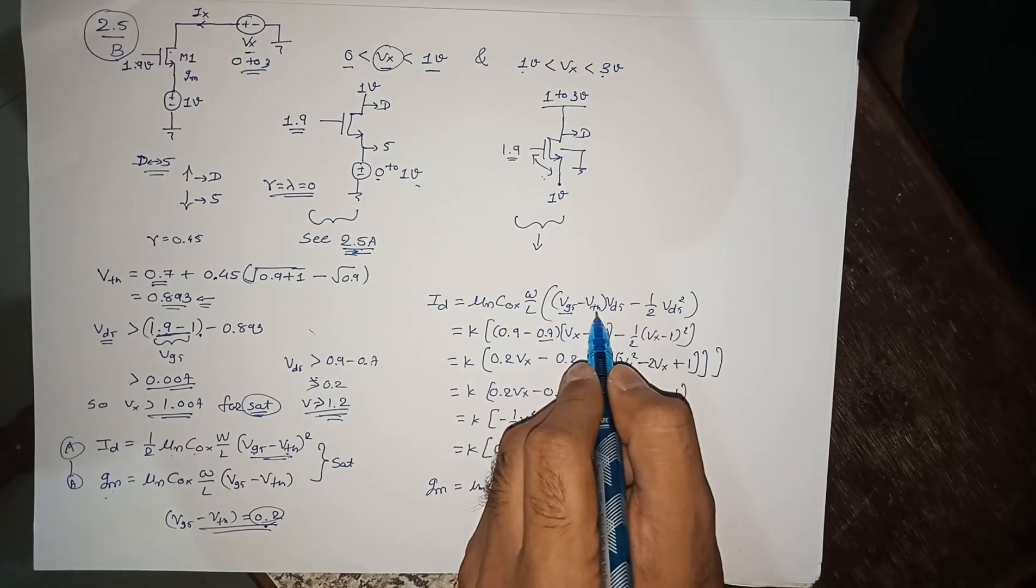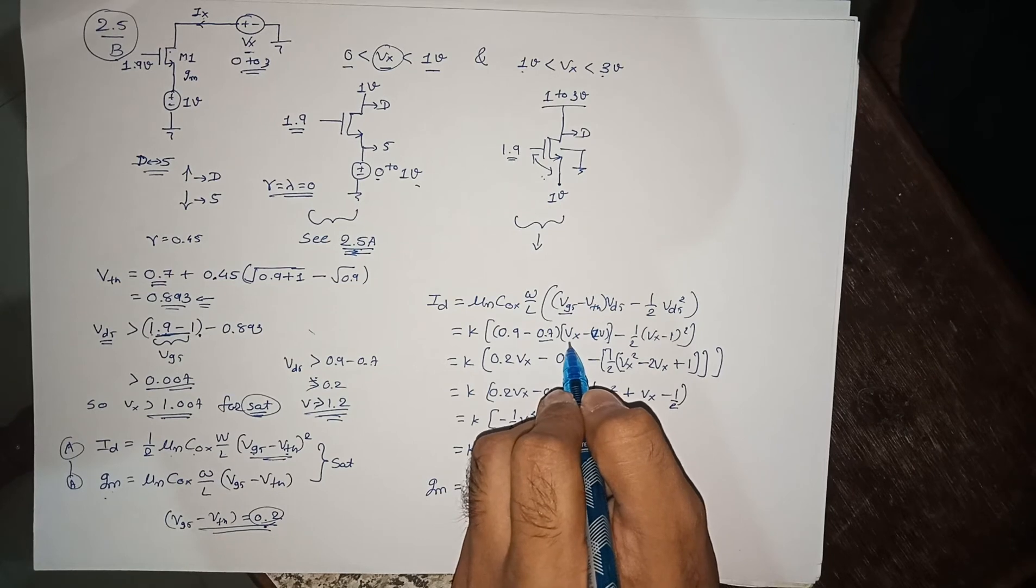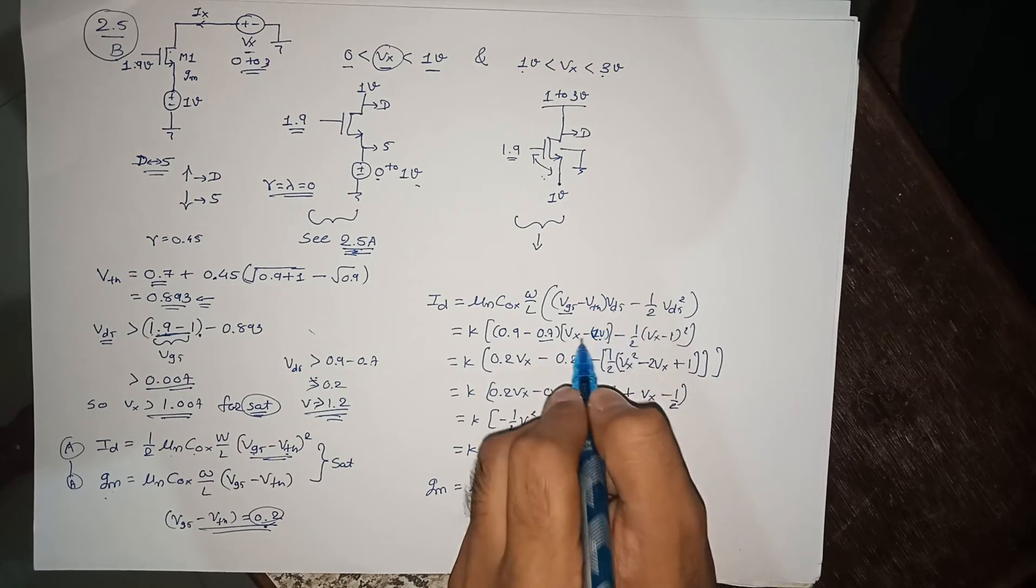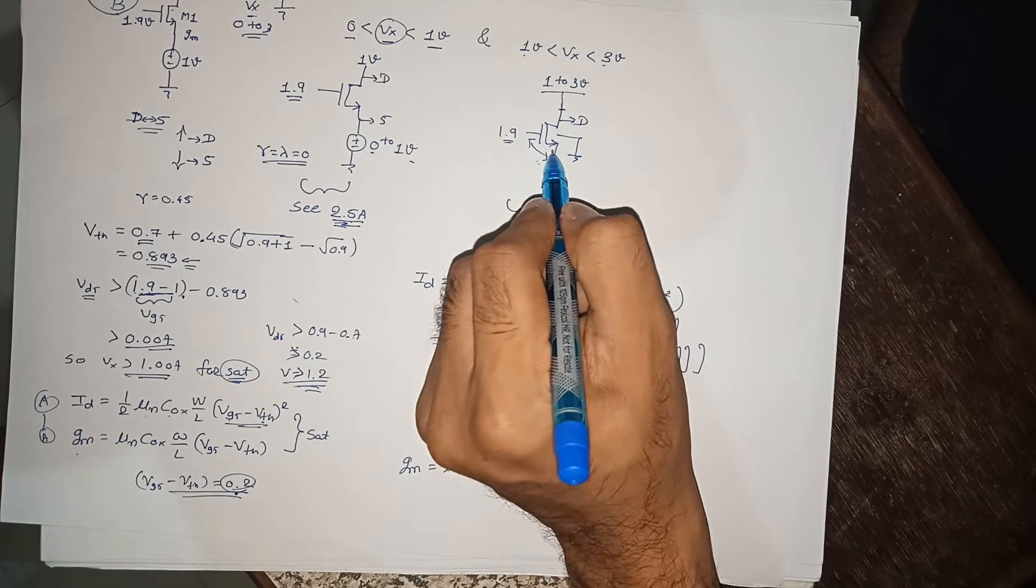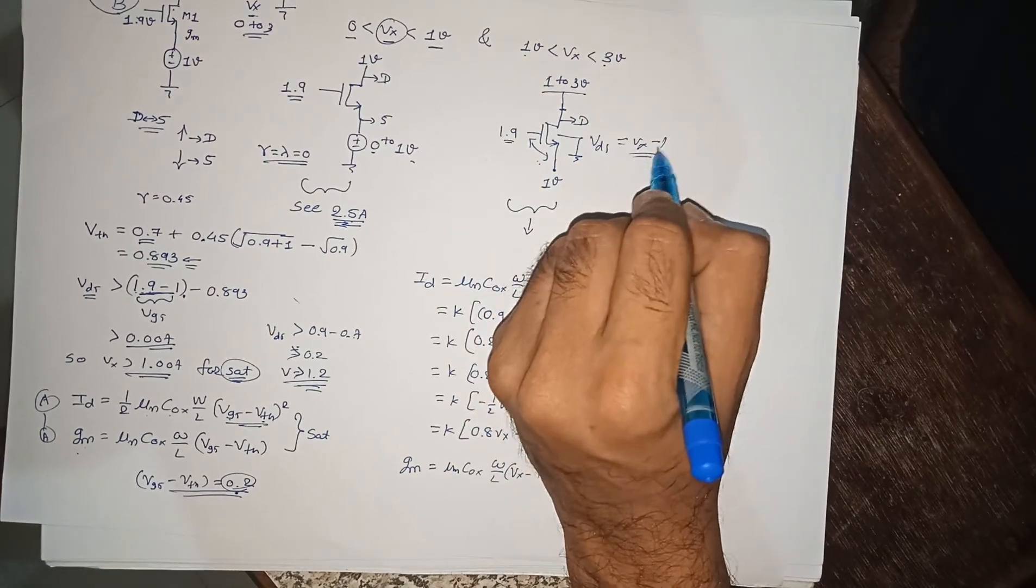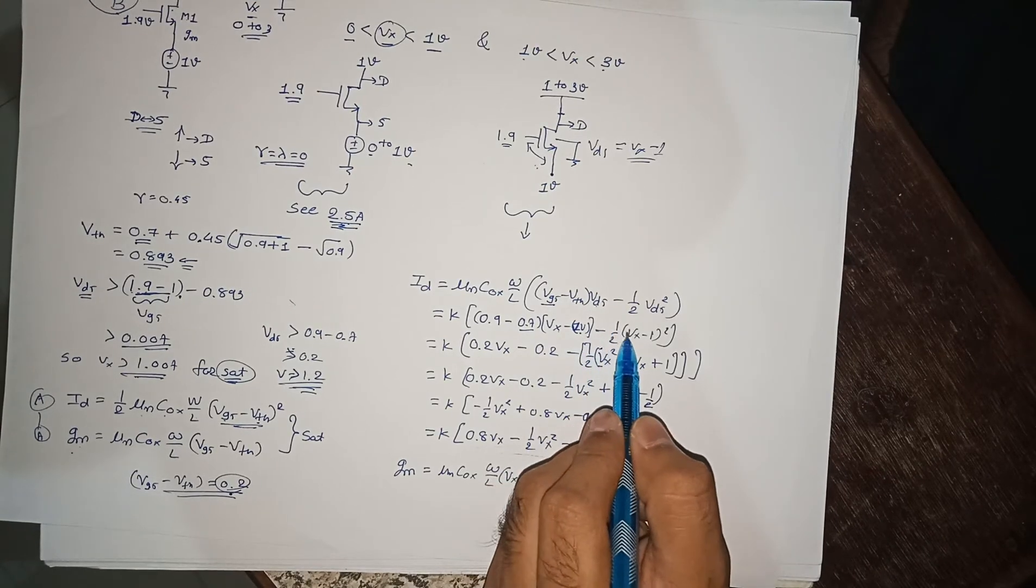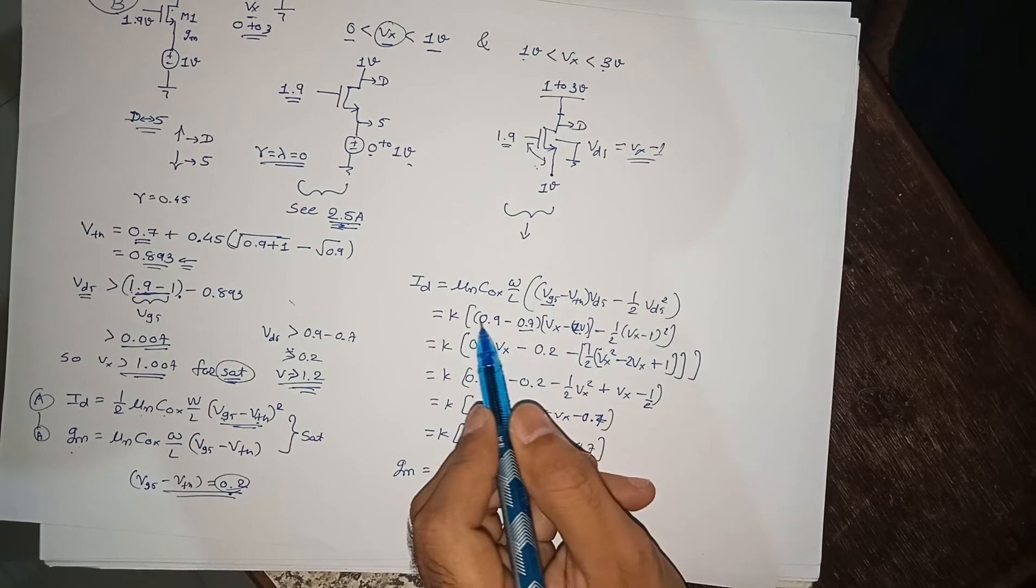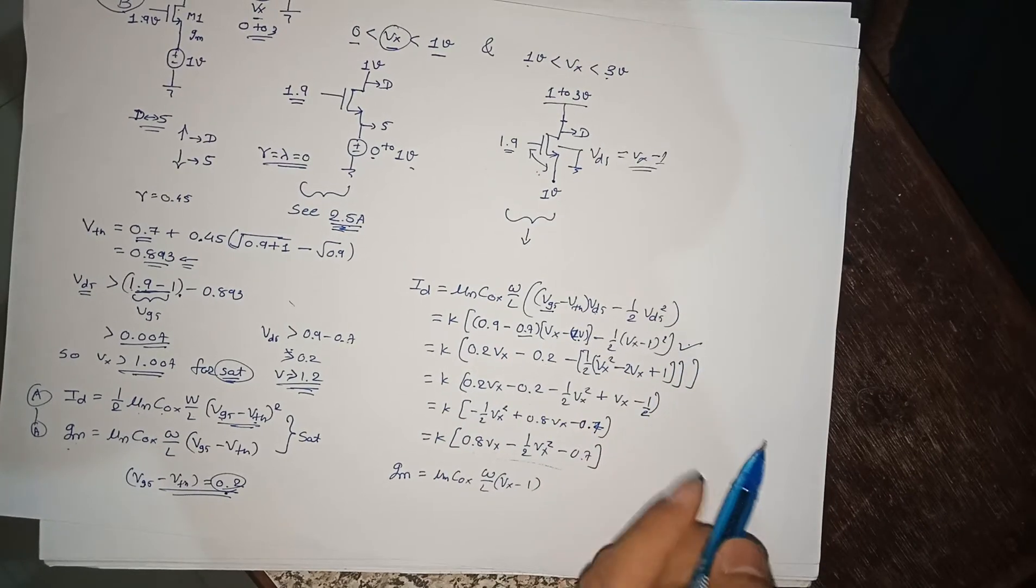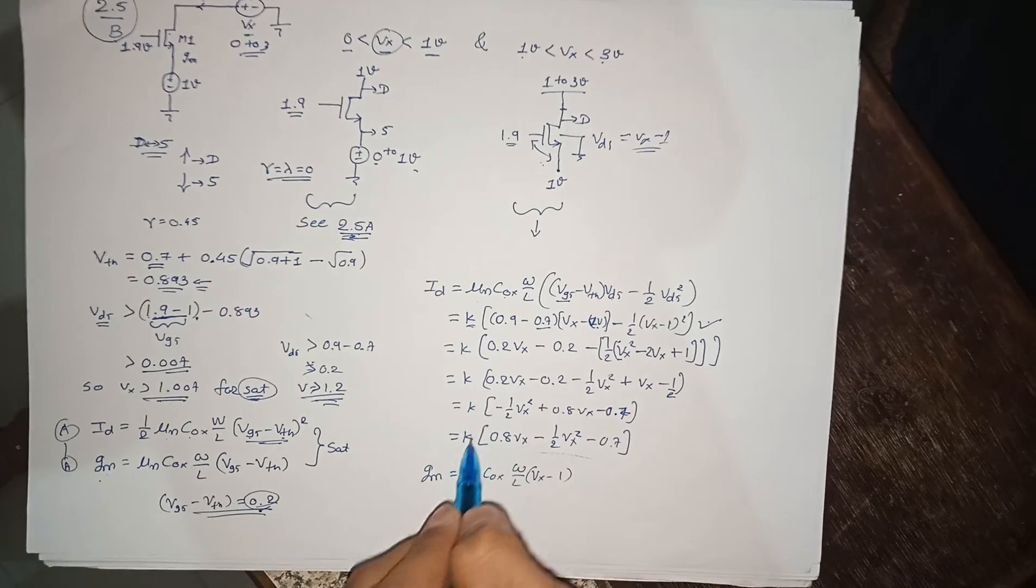If you don't want to consider the body effect, you can just use 0.7. VX minus 1, that is VDS. VDS is VX minus 1 volt. Minus one half VX minus 1 squared. Here also, this equation will be fine for your calculation. Here K is μn Cox W over L, just to simplify.